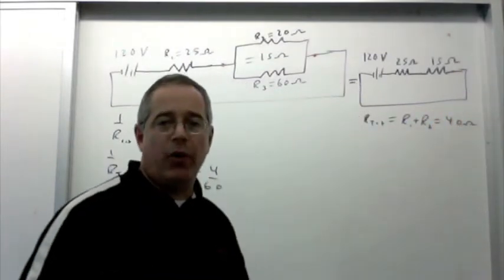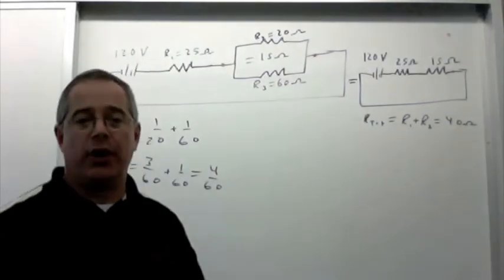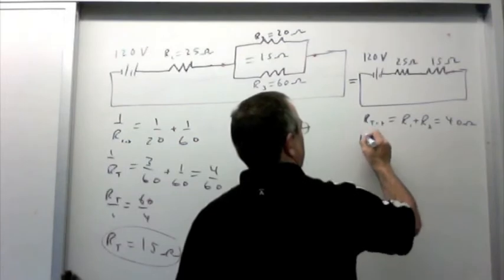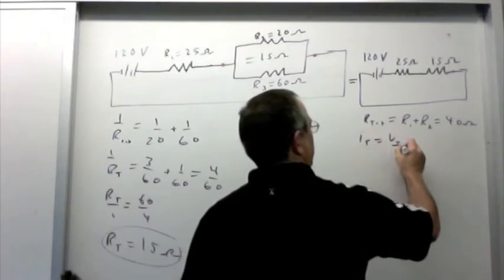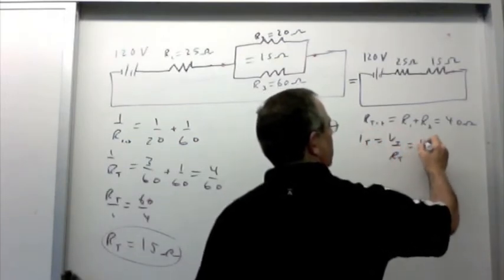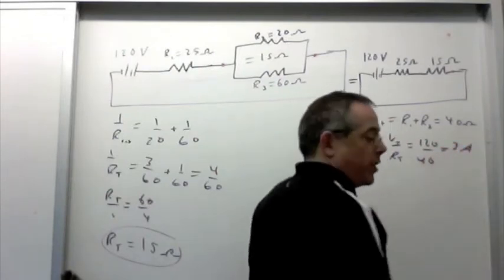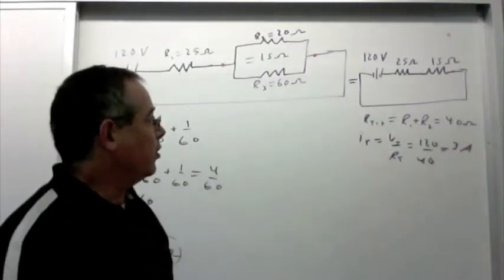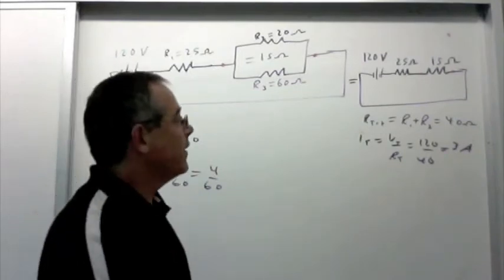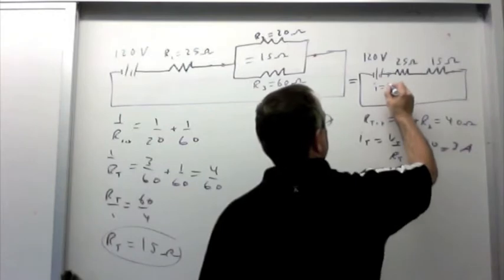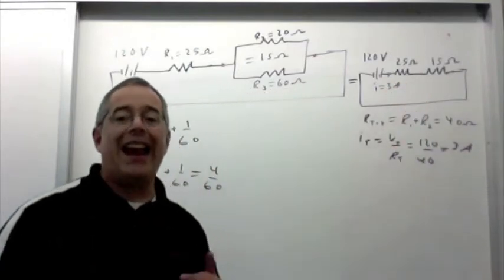That's a 120 volt battery hooked up to 40 ohms. So the current coming out of the battery is 3 amps. I total equals V total over R total. 120 over 40. 3 amps. And it's a series circuit, so the current is the same for all resistors. So we have 3 amps coming out of the battery. I equals 3 amps. And 3 amps going everywhere in the circuit.